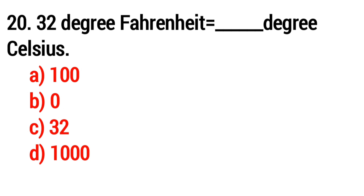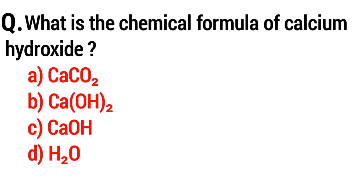Question 20. 32 degrees Fahrenheit equals how many degrees Celsius? Option B: 0. Bonus question: What is the chemical formula of calcium hydroxide? If you know this answer, tell me in the comment section. Thank you.